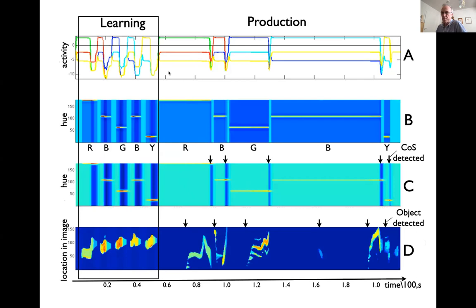During teaching, the colors were presented in an almost rhythmic fashion by the human demonstrator. But inside, the same thing happened — when Yulia pushed the object closer, the condition of satisfaction fired and the system switched to the next item it was storing. During performance, the same colors were activated, but for arbitrary amounts of time. The system was able to stabilize an intention until it detected that the intention had been satisfied. That's the core idea.